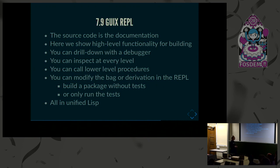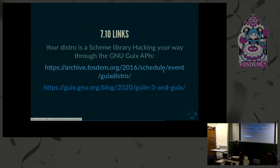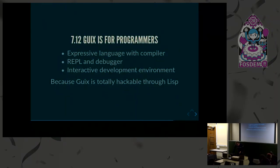To capture it all: with Geeks, the source code is the documentation. We show high-level functionality for building and exploring packages. The fun thing is you can also use a debugger - you can step through the code when you build something, through the package definition and what it does with it. It's a unified Lisp syntax. Your distro here is a Scheme library for hacking through the Geeks APIs. Just like Emacs, Geeks is for programmers. Once you master Lisp, you can do anything really.